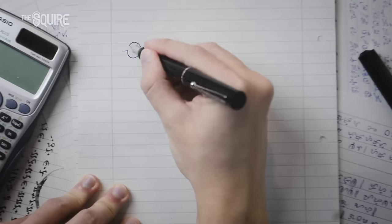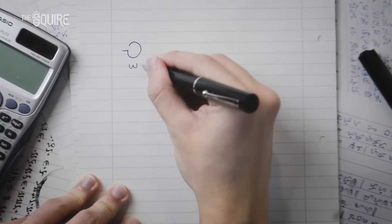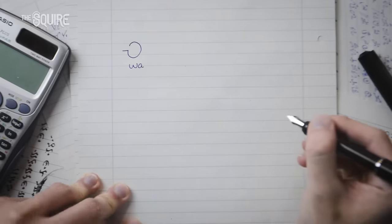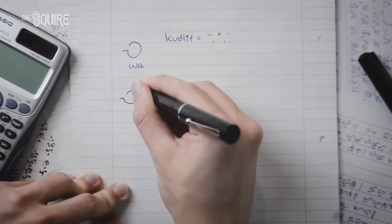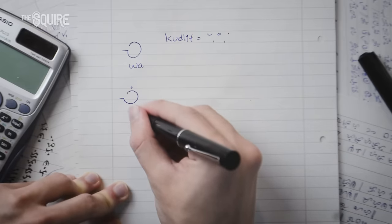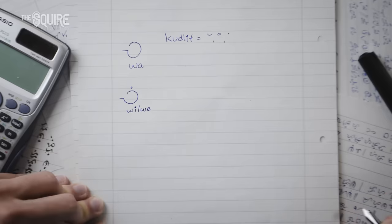Now, there are a total of four variations for writing a character that each change the pronunciation. Let's take the character Wa, for instance. Without any kudlit, it would just be the standard Wa. If we place a kudlit that looks like a small line, hook, or dot above the character, it would turn it into a Wi or We.